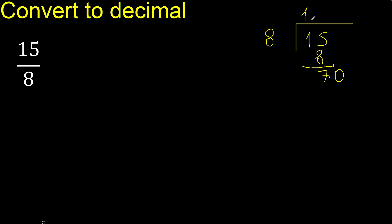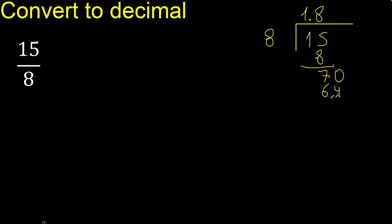Always complete with 0, and here with a point. Bring down: 70. Divide by 8 — multiply by which number. Multiply by 9 is greater. Multiply by 8 is 64. Subtract: remainder is 6.